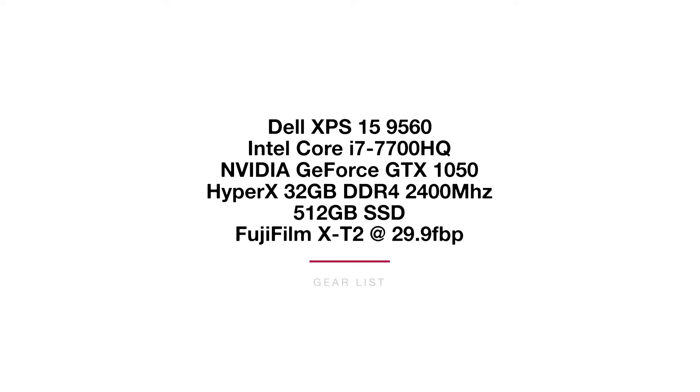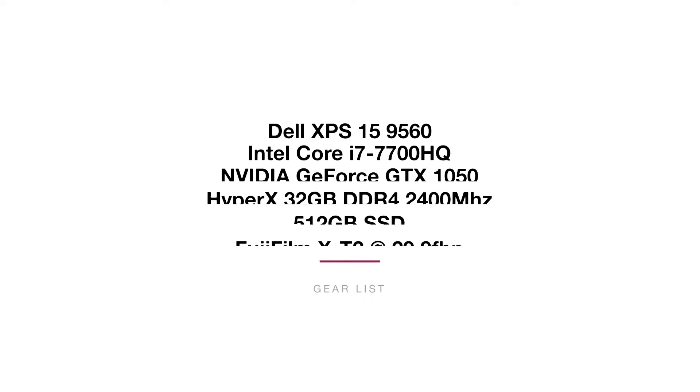In order to understand the specs of my test, here is the gear I'm using. I'm using a Dell XPS15 9560, an Intel Core i7-7700HQ, the NVIDIA GeForce GTX 1050 GPU, 32GB of DDR4 RAM at 2400MHz from HyperX, and a 512GB solid-state SSD hard drive, along with a Fujifilm X-T2 camera shooting at 30 frames per second in each of the resolutions. I'll also be dropping these into Premiere Pro to test out the RAM usage when editing video.